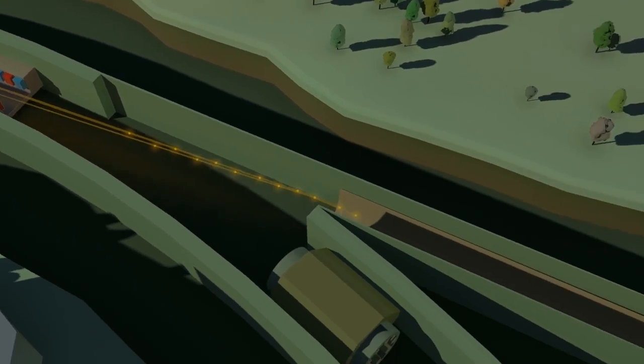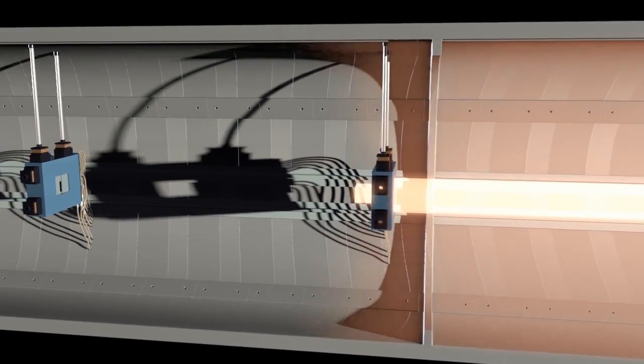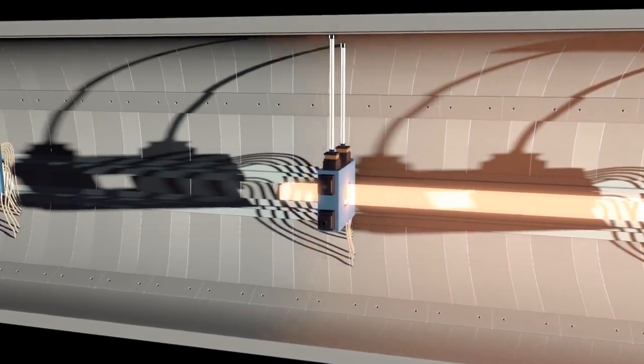These resulting beamlines are then directed towards the sample. But before they hit the sample, the X-ray wavelength is selected by a monochromator and the beam focused by mirrors and shaped by slits.